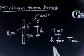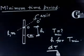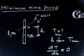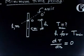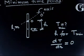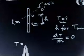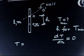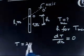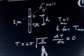The plan will be: find the time period T, differentiate with respect to H, and set it equal to zero. Now, for any compound pendulum the time period is given by T = 2π√(I / MgD). You have to remember this result: T = 2π√(I / MgD).